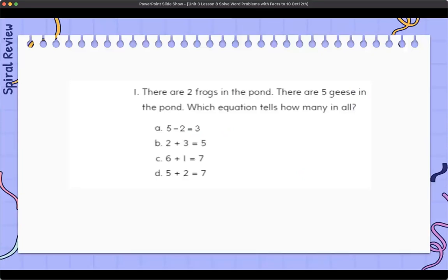Here is the spiral review today. Which equation tells how many in all? There are two frogs in the pond, there are five geese in the pond, which equation tells how many in all? So as you're going through this equation, you're going to work it out with your learning coach, but you're going to talk it out with your learning coach too.